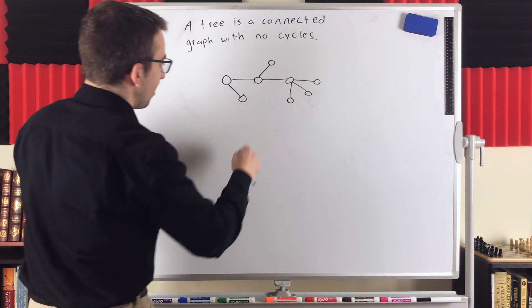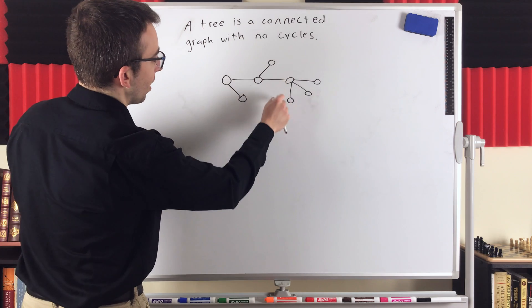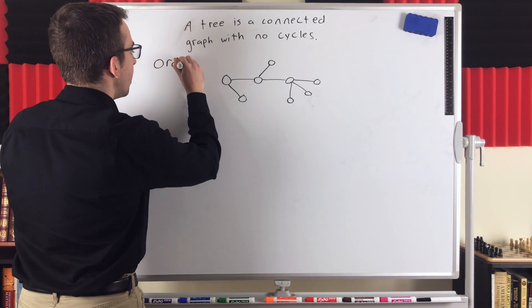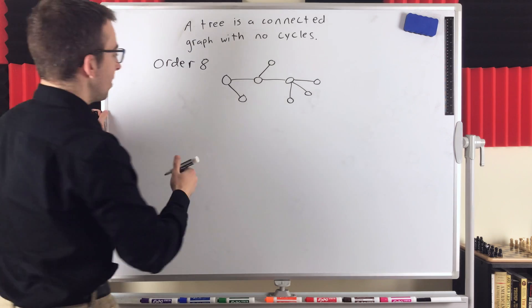So that is no longer a tree because it contains a cycle. Now you might notice this tree has how many vertices? 1, 2, 3, 4, 5, 6, 7, 8 vertices. So the order of this tree, order is the number of vertices, is 8.